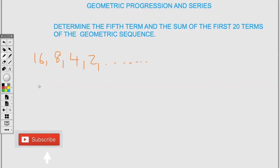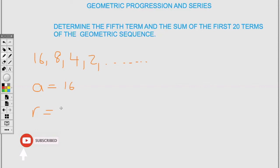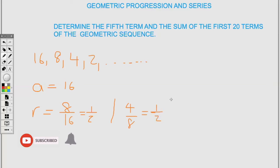The next example asks for the 5th term and the 20th term of the geometric sequence 16, 8, 4, 2, ... Here, a = 16. To find R, divide 8 by 16, giving 0.5 or 1/2. Verifying: 4 ÷ 8 = 1/2, and 2 ÷ 4 = 1/2 — we consistently get the same value, confirming this is a geometric sequence with R = 1/2.